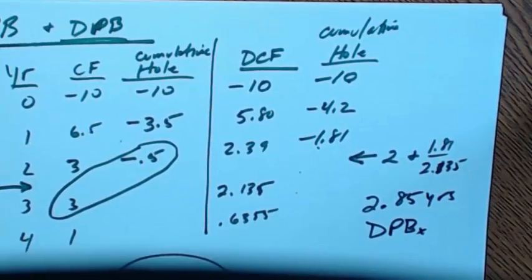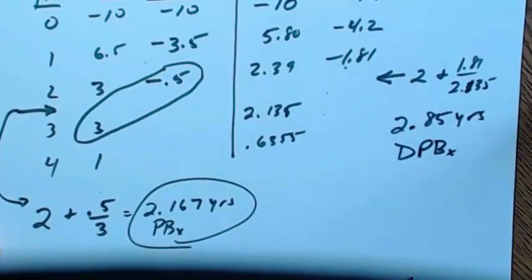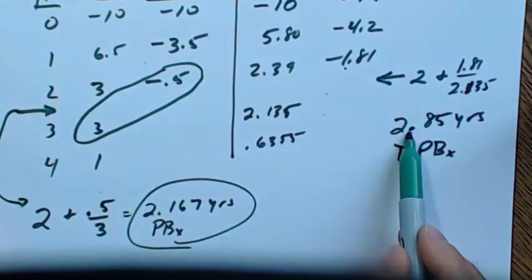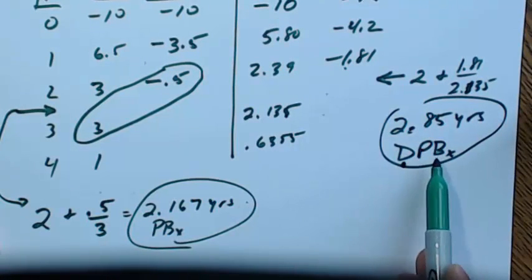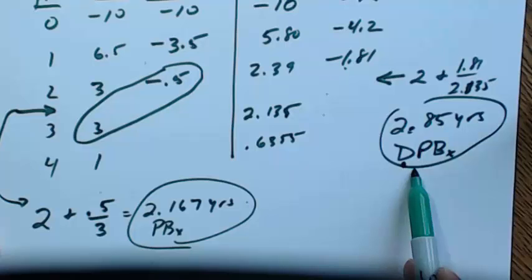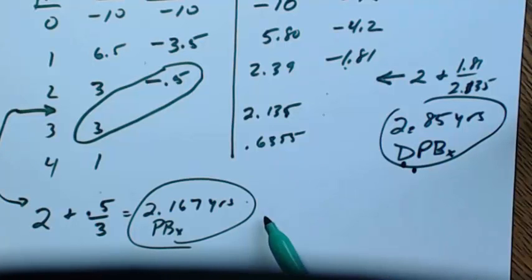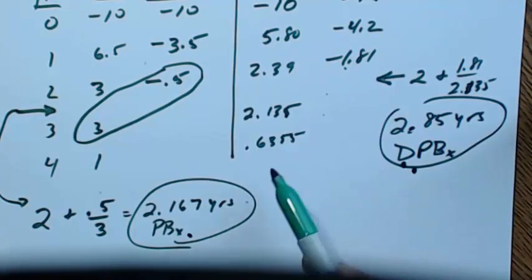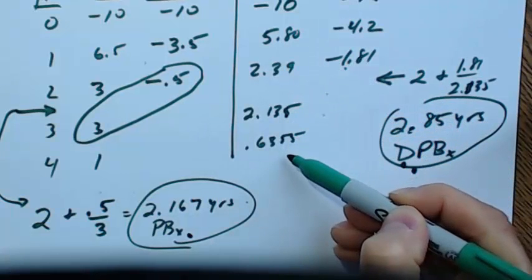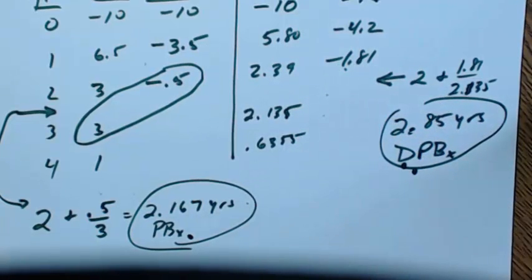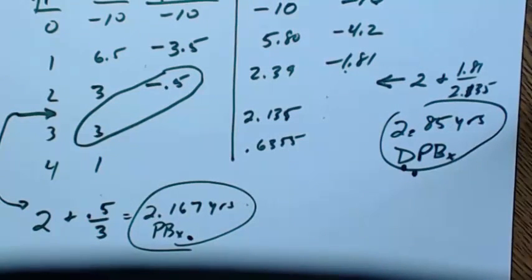You should always have a discounted payback that is longer than the regular payback, because discounting shrinks all the incoming cash flows. The higher the discount rate, the bigger the difference — at 12%, it's fairly significant.